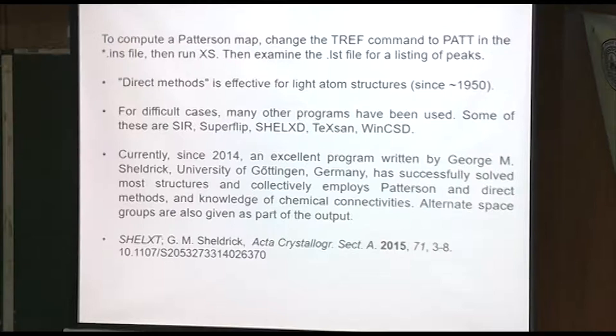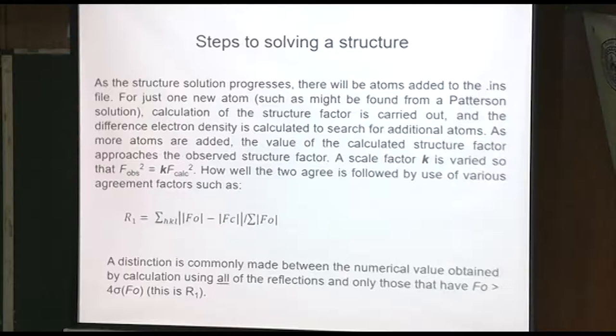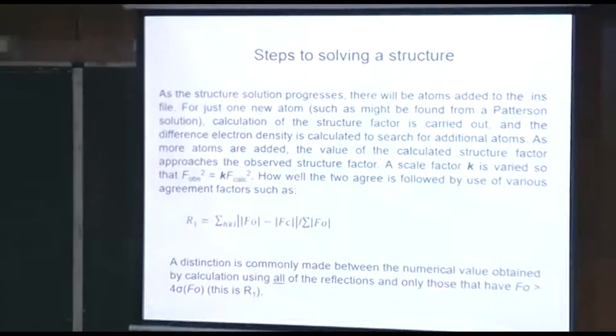Reviewing the structure solution process, you're going to be sequentially adding more atoms to your model. Each time you add a correct atom, your R value should go down. If it's an incorrect addition, it will go up. Gradually, it converges to the final lowest R value. Nowadays, we usually expect less than 10% on the R value. But less than 5% is not unusual.